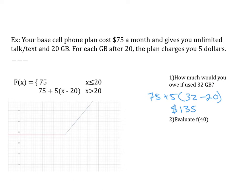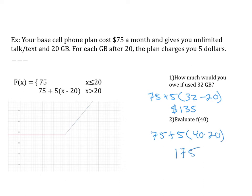For our second question, f of 40: 40 is not less than or equal to 20, but 40 is greater than 20, so I plug it into the second function. 75 plus 5 times (40 minus 20) gives us $175 for our plan.